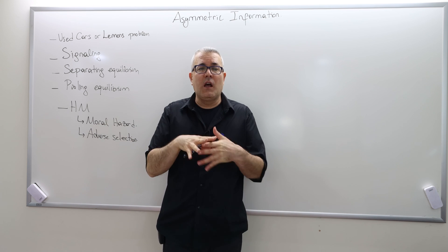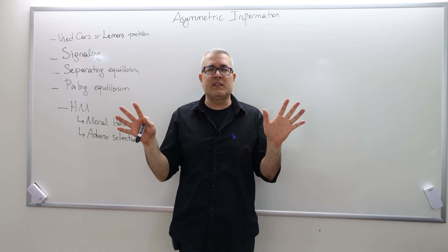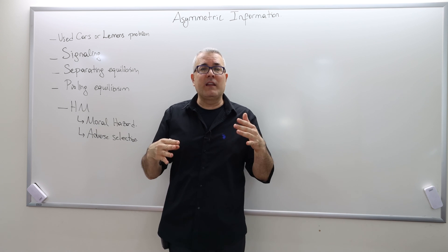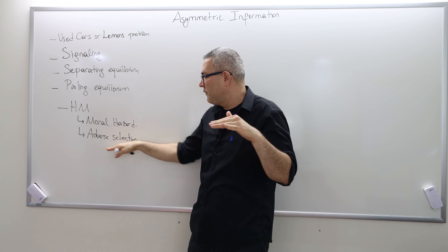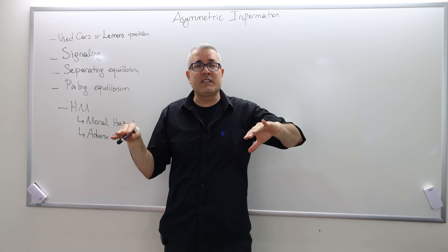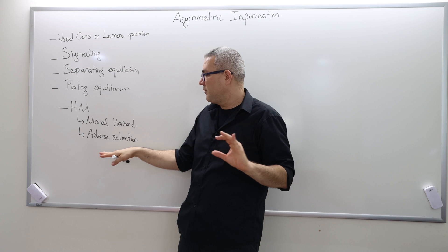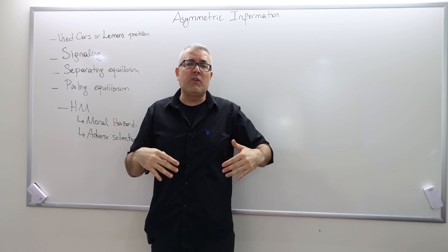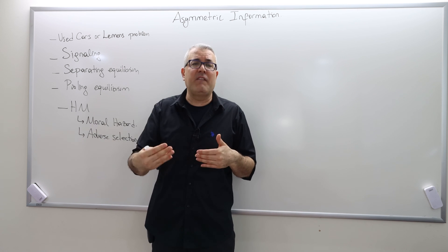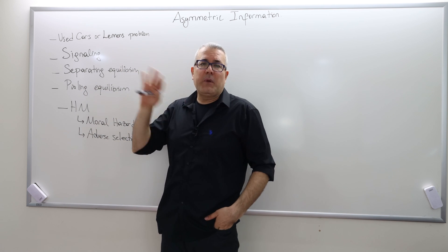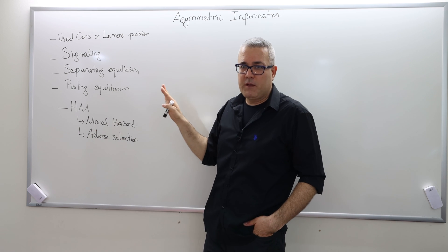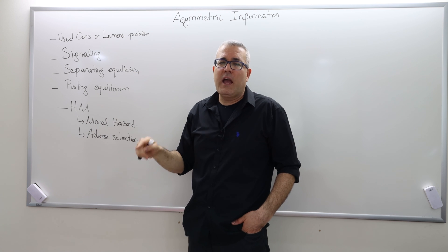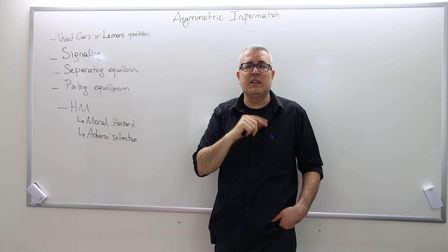To minimize adverse selection, one policy is the government enforcing that everyone — whether careful or careless — must buy a minimum level of insurance. If everyone must buy it, then agents don't have the opportunity to self-select. Careful drivers can't say $1,000 is too high and skip it. Obviously, the price has to be low enough that careful drivers are not made worse off. So these are the moral hazard and adverse selection problems caused by asymmetric information. I will talk about the lemons problem and signaling with more detailed models in the next videos.